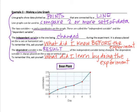So here's the time down at the bottom. So each day the plant grows. So the independent variable is the one being changed during the experiment. It's always placed on the x-axis or the horizontal axis. What did I know before the experiment? That's how you know what to put on that horizontal axis. This is the question you ask yourself to determine which one is independent.